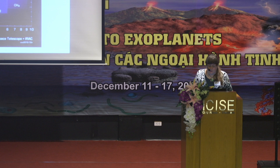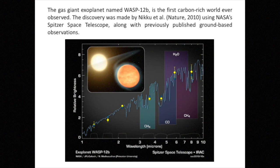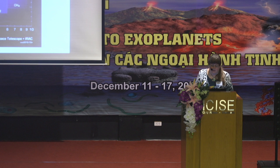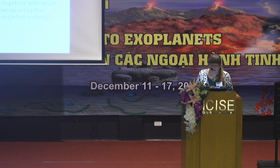Carbon is also important in exoplanets. In 2010, a very interesting exoplanet named WASP-12b was found — it was very rich in carbon and was the first carbon-rich exoplanet discovered. The paper was published in Nature in 2010. So if there are more such planets, the accretion of such planets onto the star could also cause overabundance of carbon or other elements that dominate in those planets.